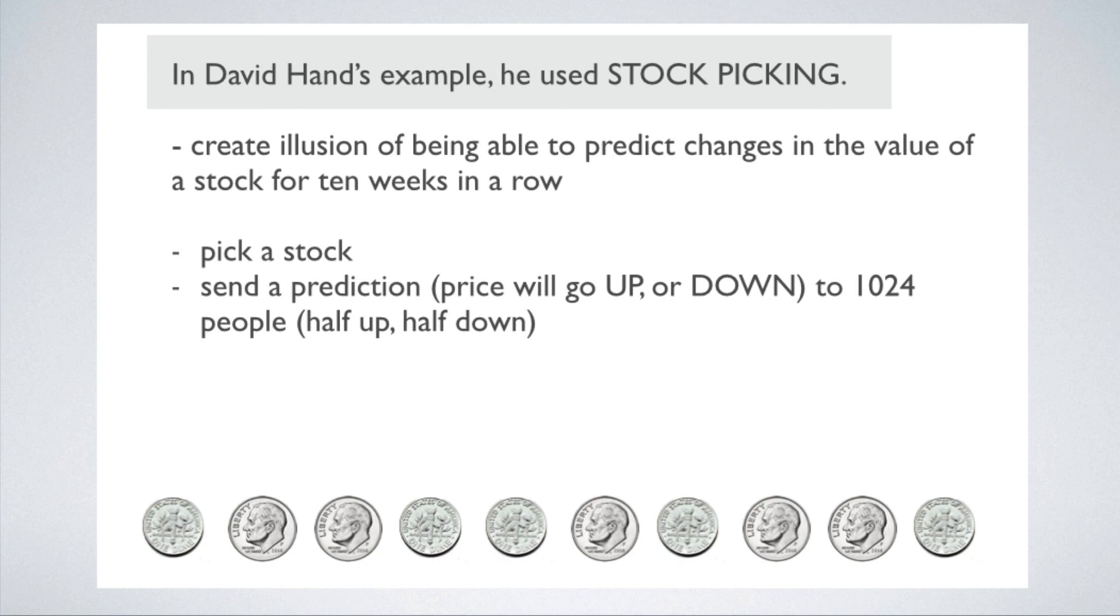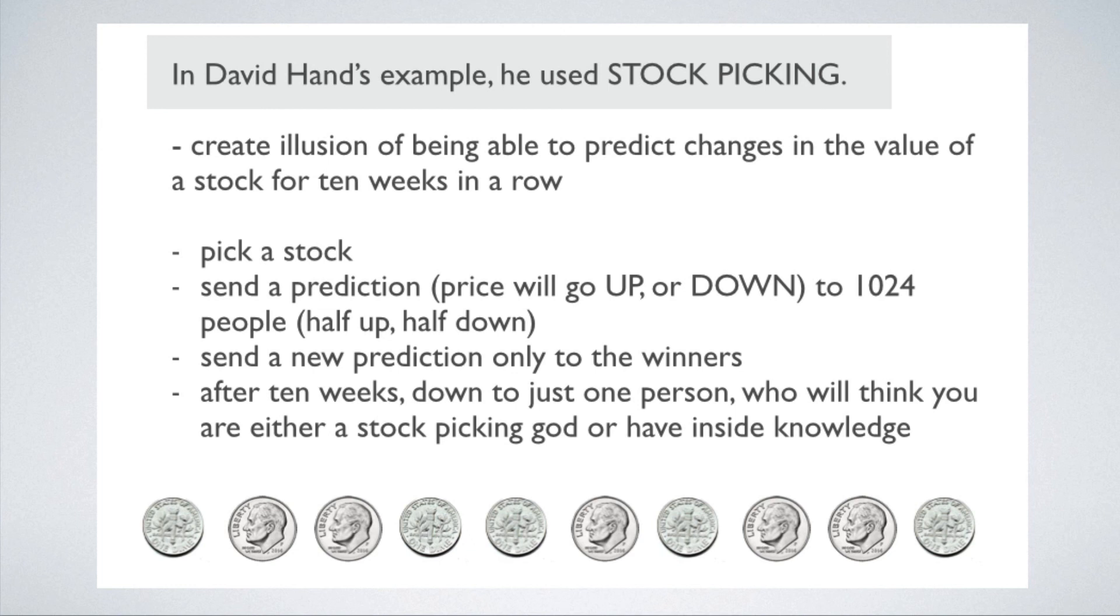For half of them, you predict the price will go up. For the other half, you predict it'll go down. Each week, you'll have a set of winners. And you repeat the process, just like we did with the coins, so that by the end of 10 weeks, you'll be down to just one person. And that person will think you've successfully predicted how the price of the stock would change for 10 weeks in a row.